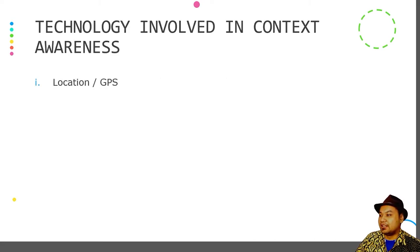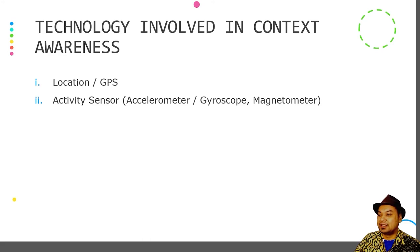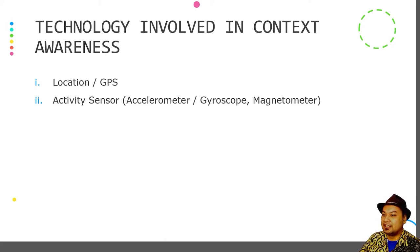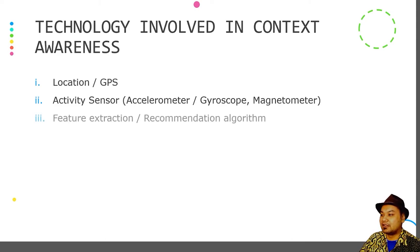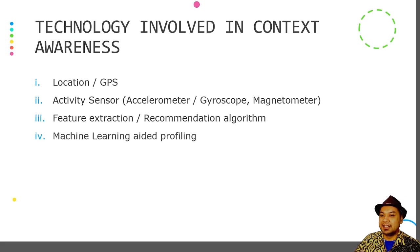Here are some of the technologies involved in context awareness. Location or GPS, and activity sensors, must be taken into account when generating recommendations or sensing context. These include the accelerometer, gyroscope, and magnetometer, which can detect your activity — whether you are cycling, running, riding a bike, or traveling in a vehicle. It also involves feature extraction, recommendation algorithms, and machine learning-aided profiling to profile logs, behavior, user profiles, gender, demographics, and so on.